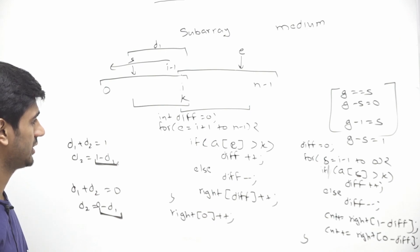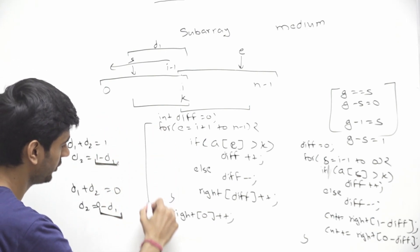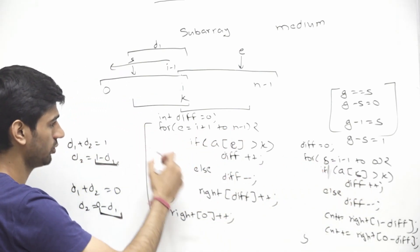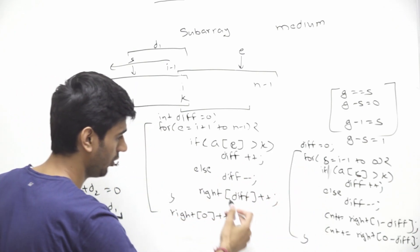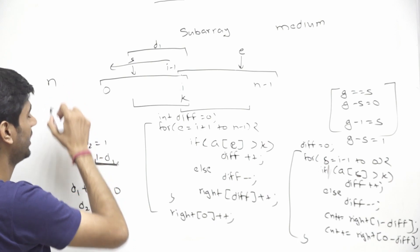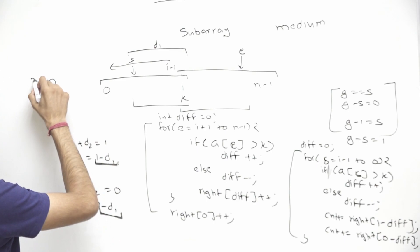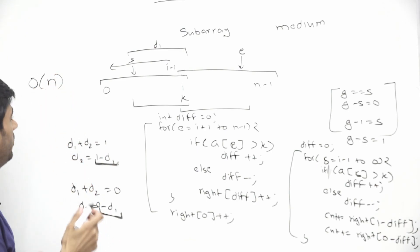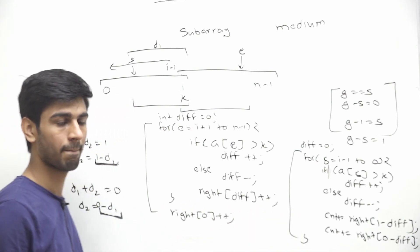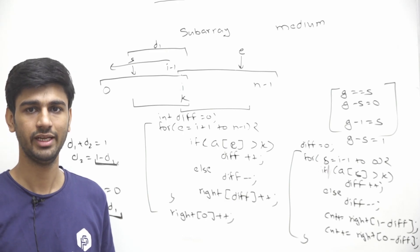The overall time complexity is O(n) since we iterate from i+1 to n−1 and i−1 to 0 — combined that's n iterations, each doing O(1) work. Space complexity is also O(n) due to the hashmap. That's all for this video.